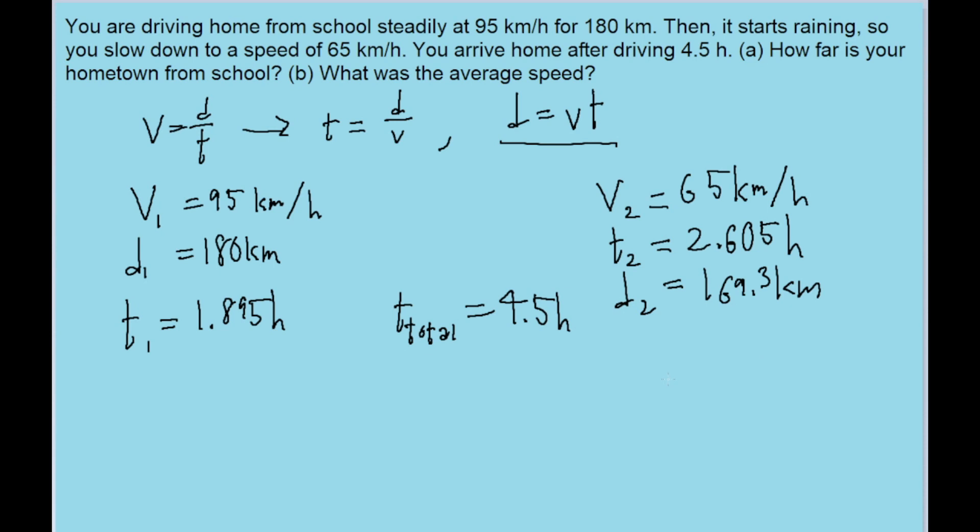So now part a asks for the total distance traveled, so all we need to do for that is take d1 and add d2. So we take 180 kilometers and add 169.3 kilometers, and if we do that then we get a distance of about 349.3 kilometers approximately. So that is our answer to part a.